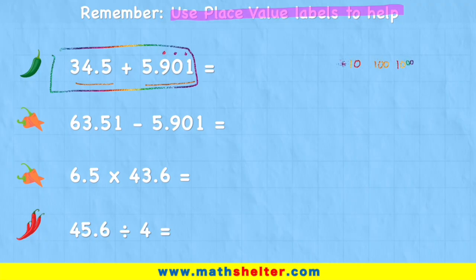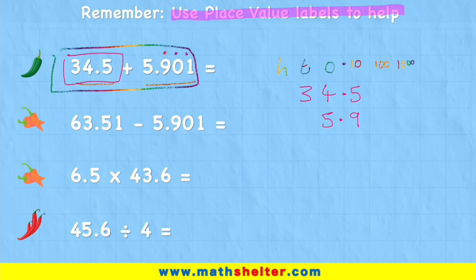So let's start with thousandths and hundredths, tenths, put my decimal back, ones, tens, hundreds. And let's see if that's enough. Now I'm going to put my numbers in place. I have 34.5: 34 is three tens, four ones, decimal place, five tenths. Added to five ones, decimal place, nine tenths, zero hundredths and one thousandth.